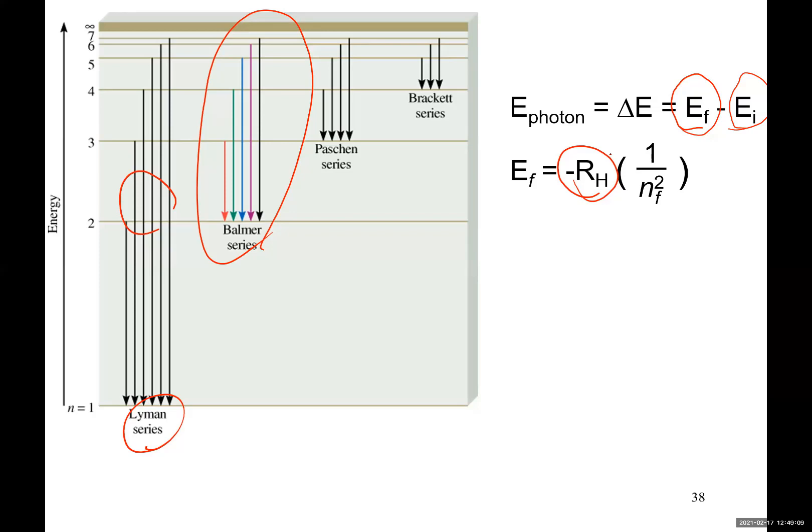N is the principal quantum number. If I'm talking about the electrons dropping from second level to first level, so N is equal to 2. I'm sorry. Let me explain again. This is NF. This is where electron is going to drop to. So NF is equal to 1. That's what we are going to study.